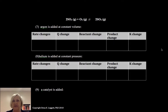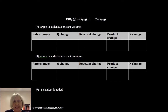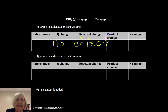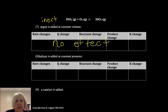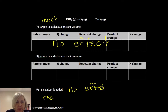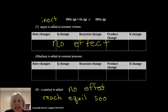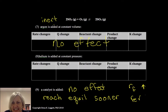Argon added at constant volume has no effect, because we don't change the relative partial pressures of the reacting gases. The inert gas does not change anything. This is also true of a catalyst. A catalyst added at the beginning helps you reach equilibrium sooner by increasing both rate forward and rate reverse equally, but it does not stress the equilibrium. No shift occurs.